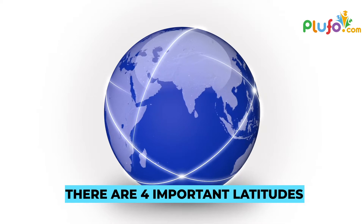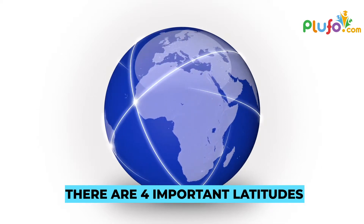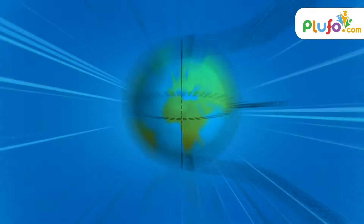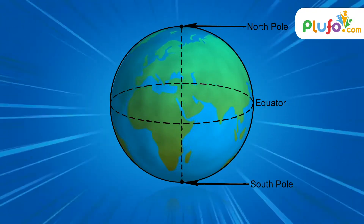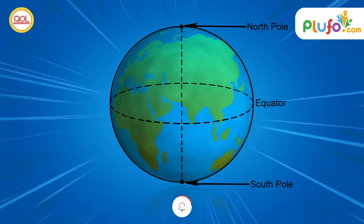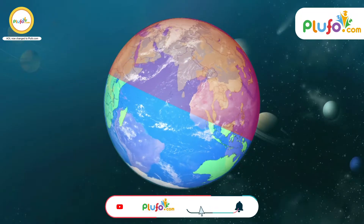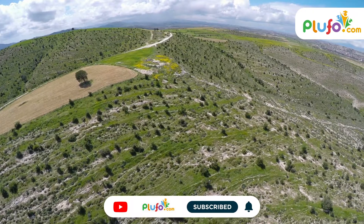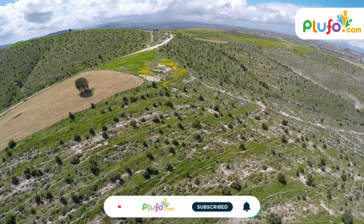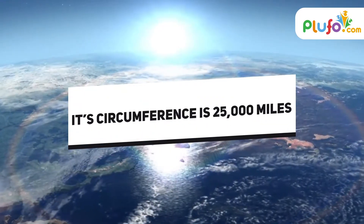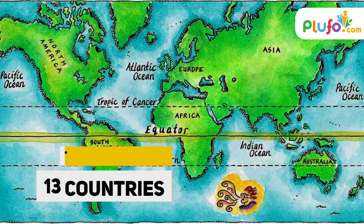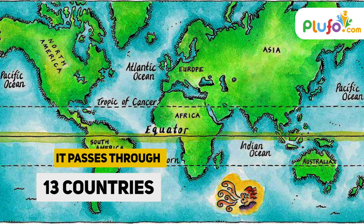There are four other latitudes drawn parallel to the equator, which fall on either the north or south of the equator. In the middle we have the equator at zero degrees. It divides our planet into two equal halves. It is also the widest part of Earth, having a circumference of nearly 25,000 miles. The equator passes through 13 countries.